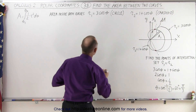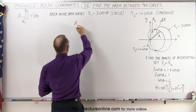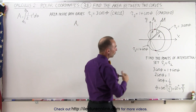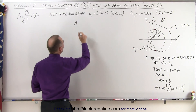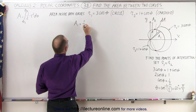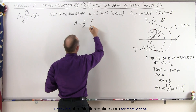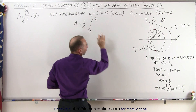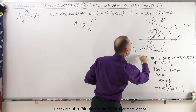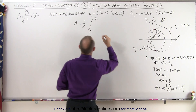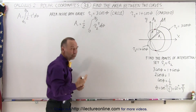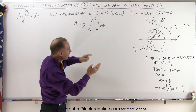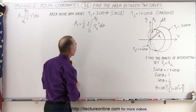Starting with the first one, let's find A1. Using the symmetry, we're only going to find the top half and then double it to get the bottom half of the area as well. So A1 is going to be equal to 1/2, using the general equation, times the integral from 0 to pi over 3. A1 here is defined by the curve R2, so it'll be R2 squared times d theta, and since we're only taking limits from 0 to pi over 3 for the top half, we have to multiply times 2 to get the total area.